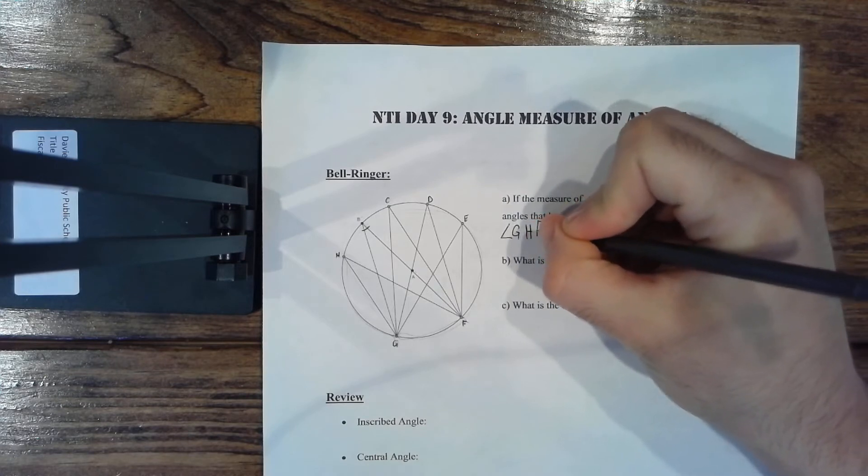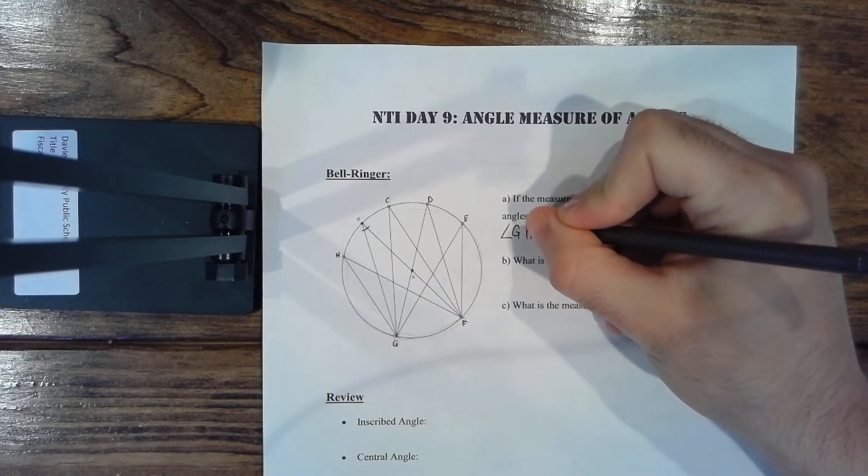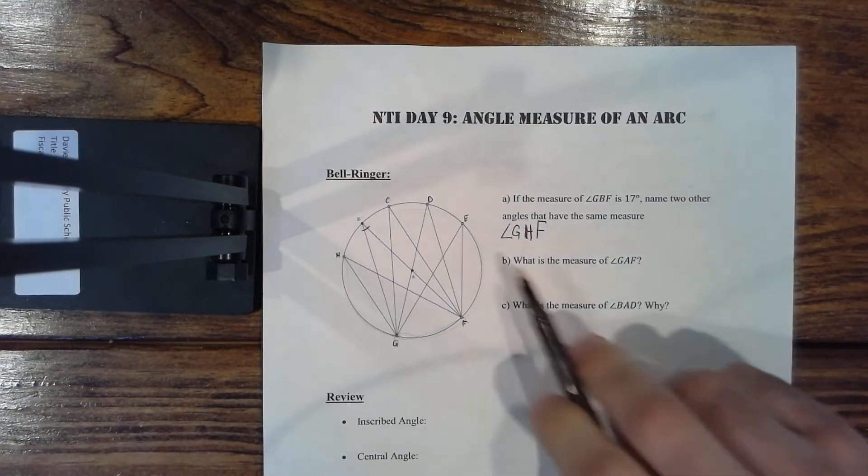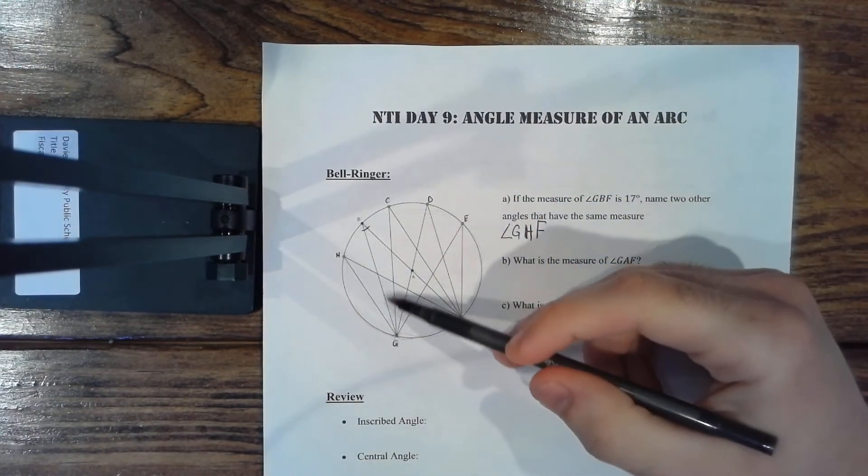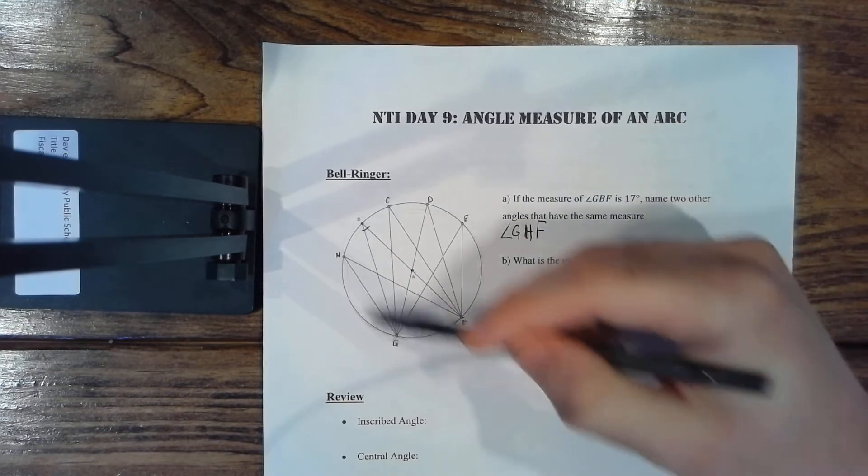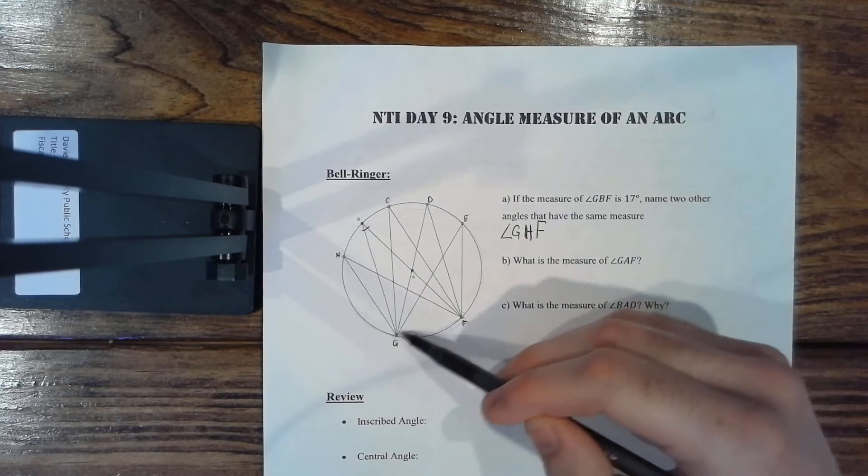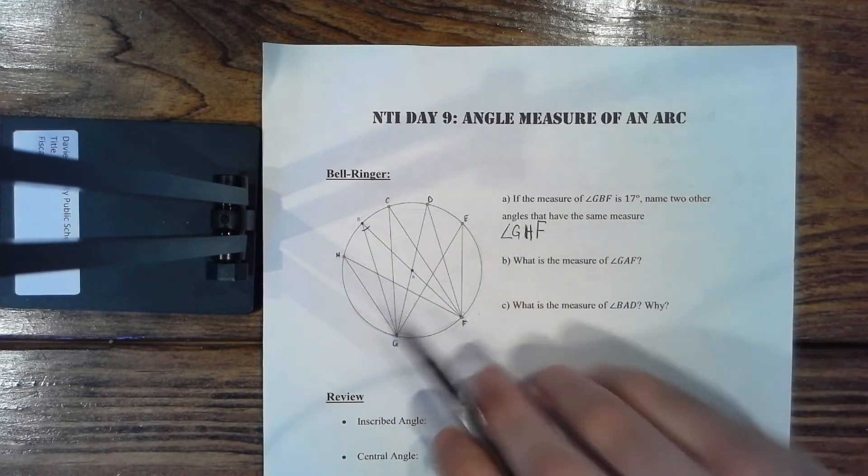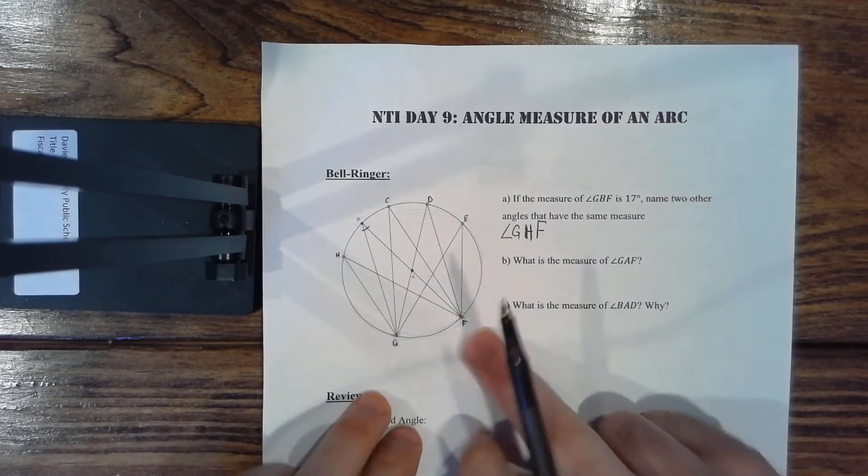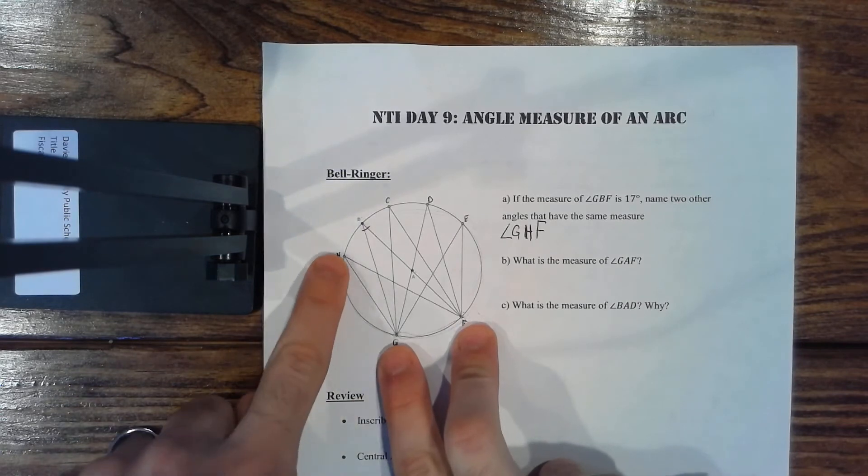And on your Google Doc, guys, I know it might be a little bit hard to find the angle button. If you just want to put GHF, I'll take it. So angle GHF, well GBF has the same measure as GHF, GCF, GDF, and GEF. So if you have these two fixed points here, so if you have G and F, and you just take this one point and you move it all...